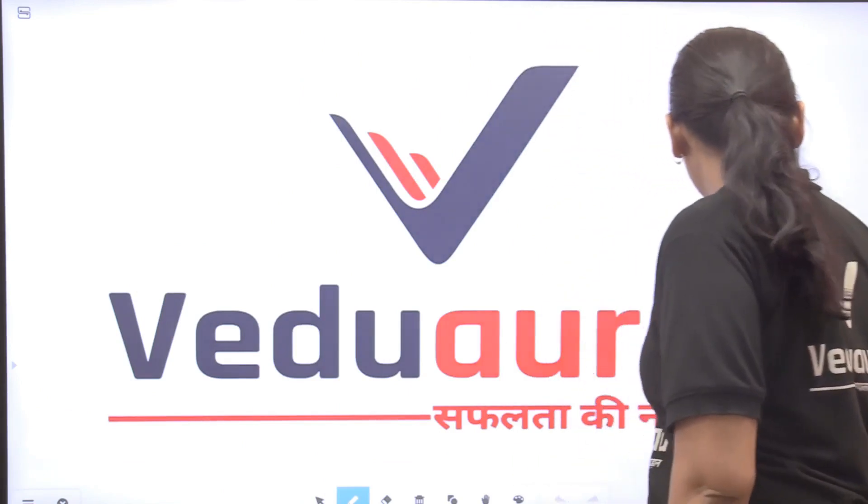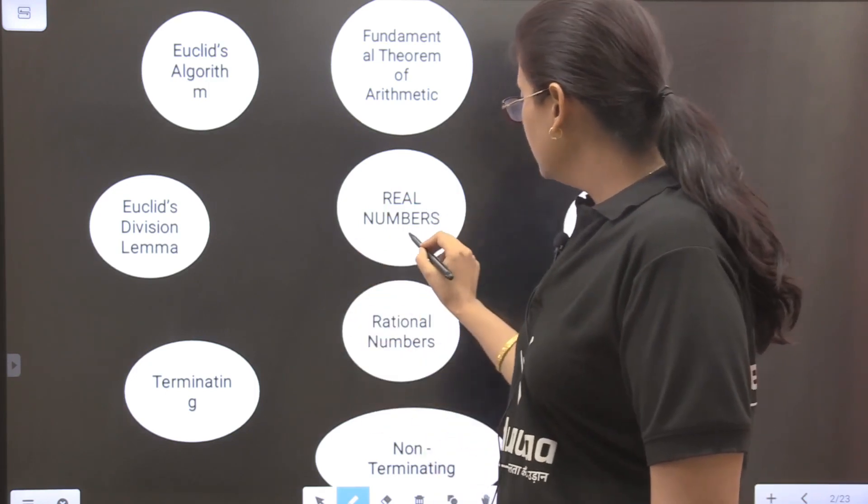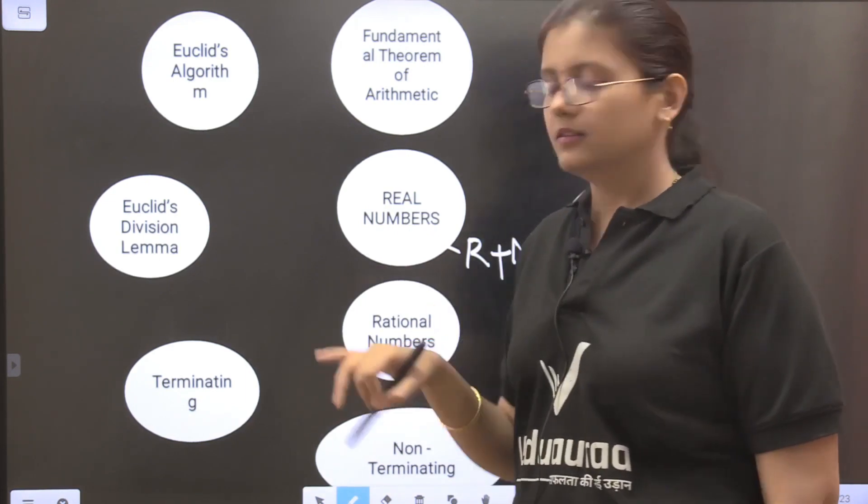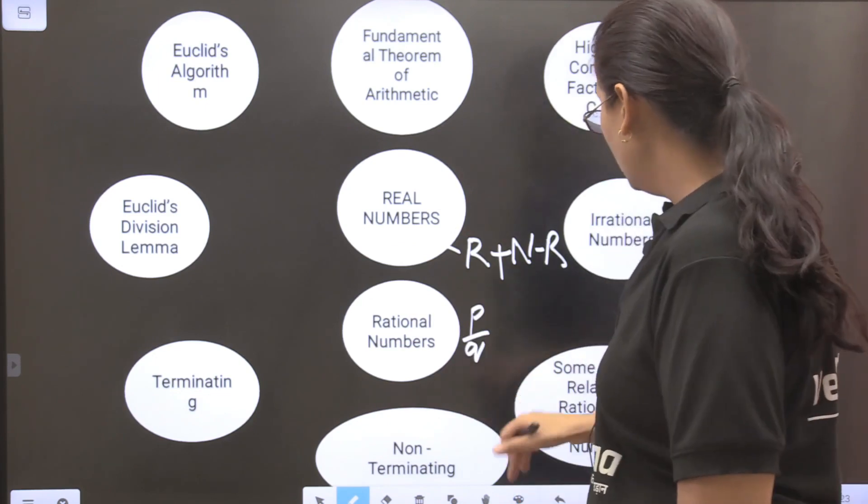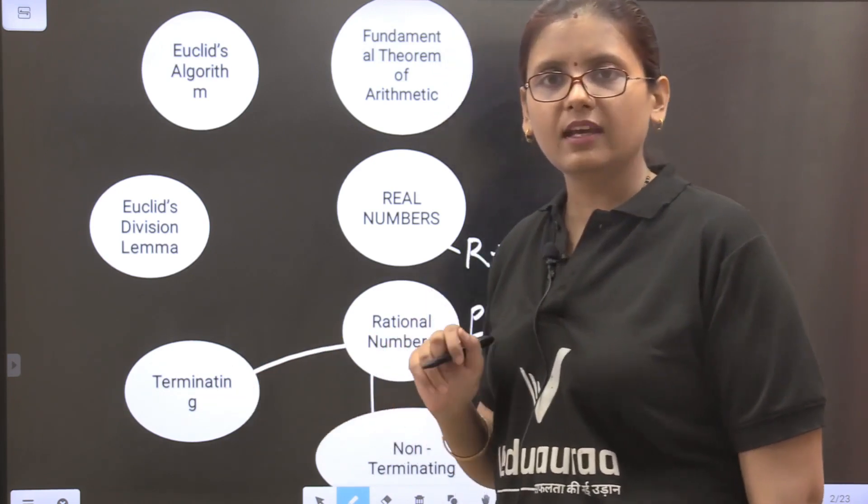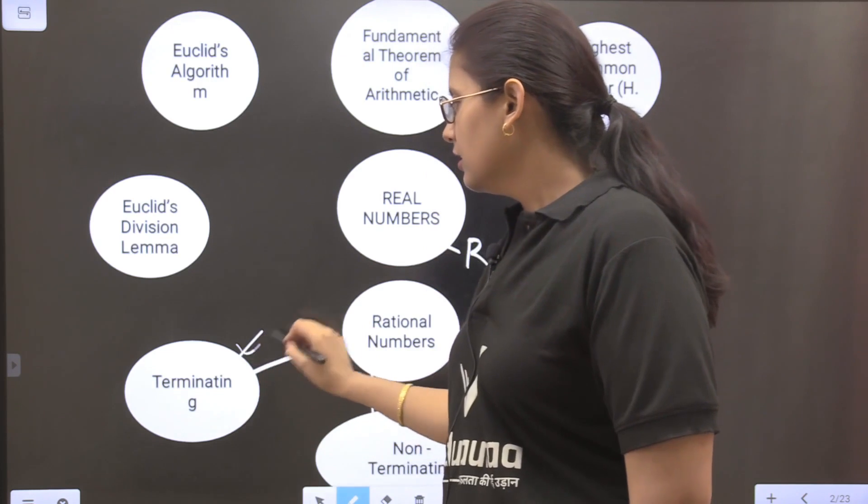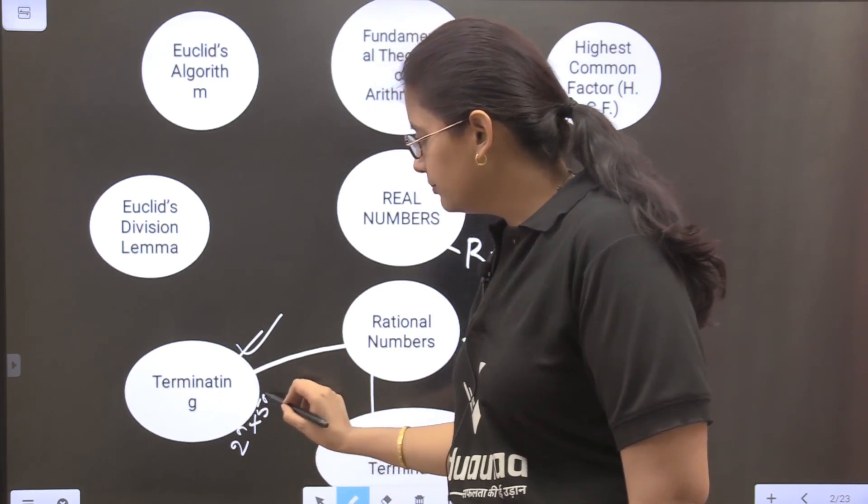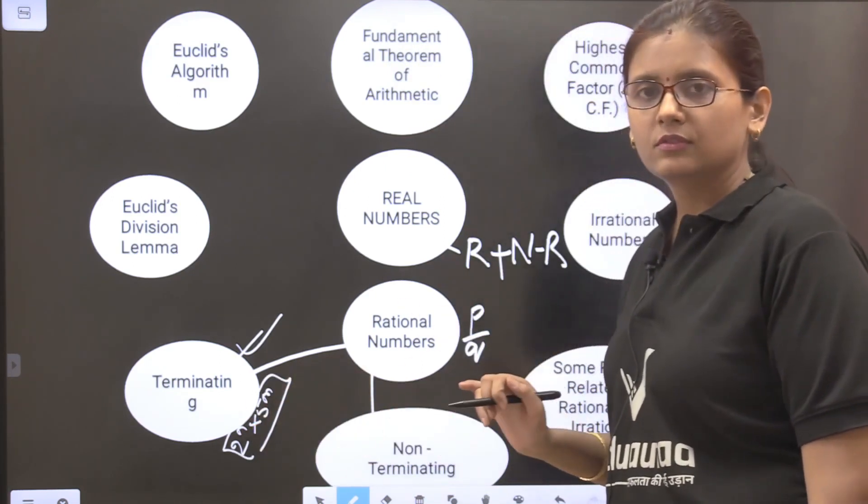So in the starting I will give you a quick recap of what are the real numbers. Real numbers are the rational and irrational numbers. Rational is which can be expressed in the form of P by Q. Now rational numbers can be of two types: they can have terminating decimal expansion or non-terminating. If they are terminating then the denominator will be in the form of 2 to the power n into 5 to the power m. And if they are non-terminating then the denominator will contain factors other than 2 and 5.